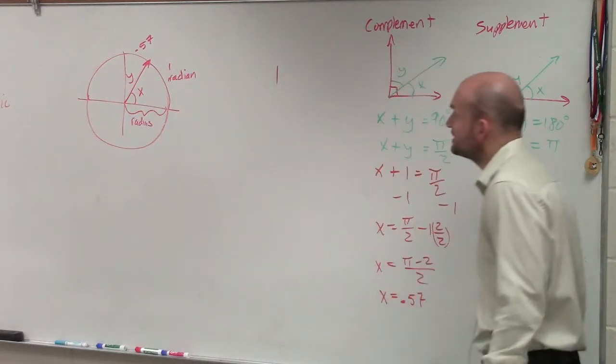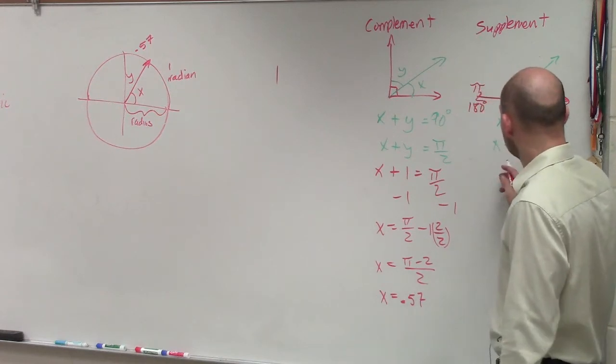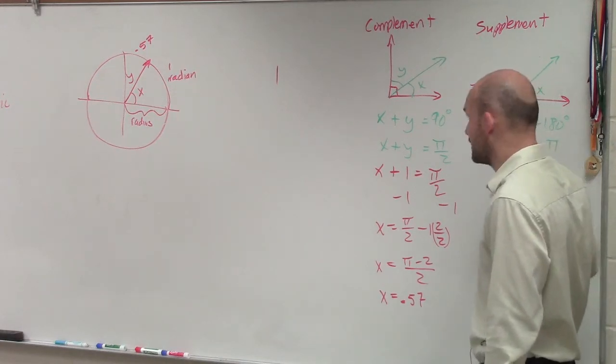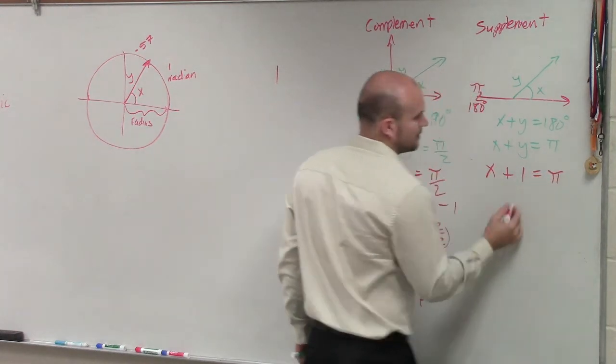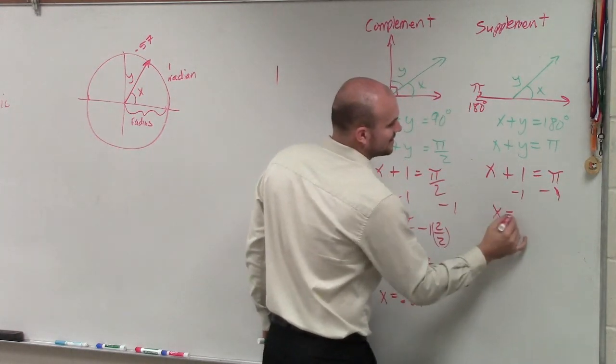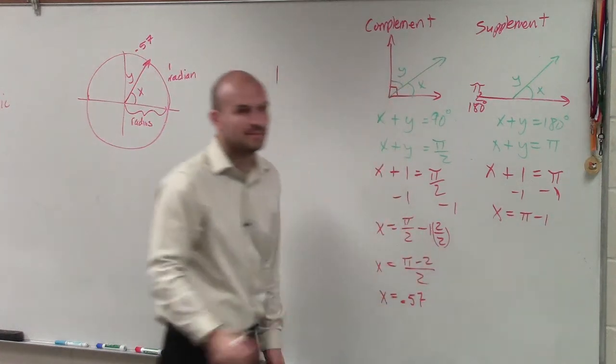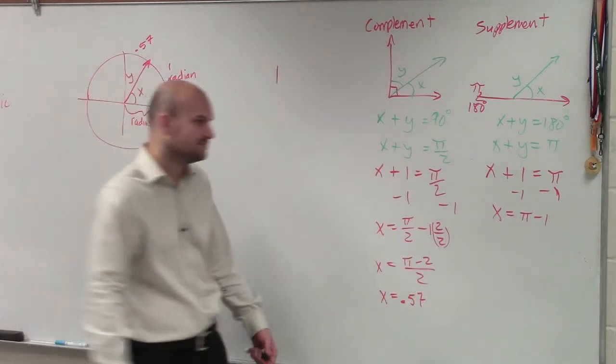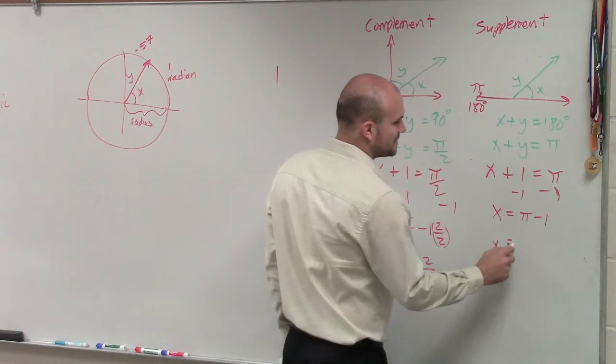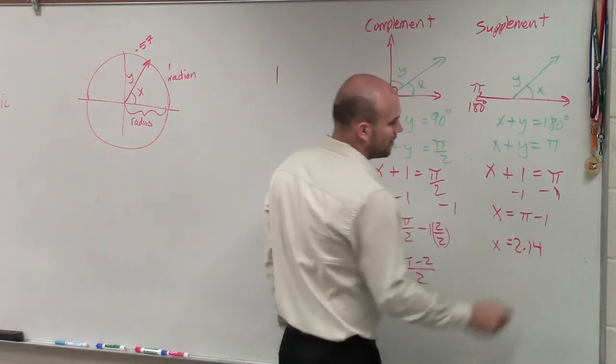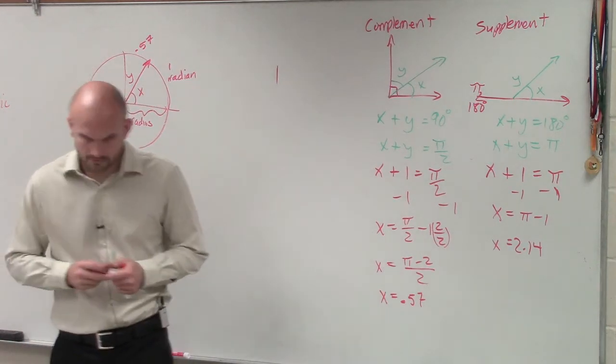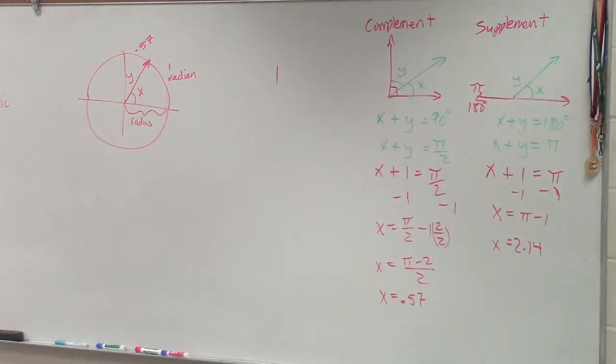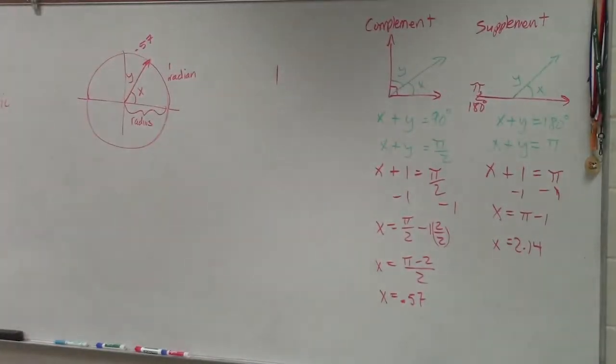Now we need to determine what the supplement is. So the supplement is x plus y equals pi. Therefore, it's x plus 1 equals pi. Minus 1, minus 1. x equals pi minus 1. Well, remember, pi is 3.14159. So therefore, minus 1 is equal to 2.14 rounded.